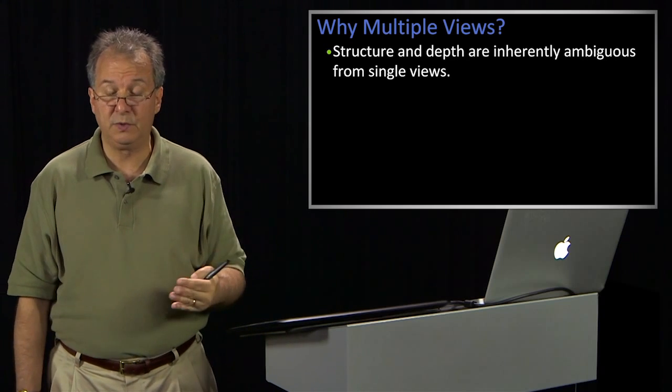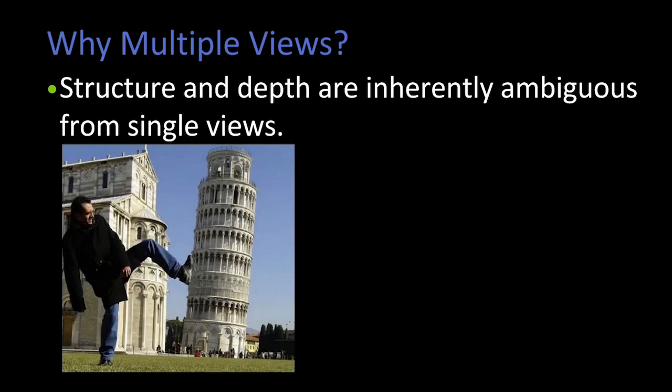Remember, we're projecting from 3D to 2D. When we do that, we lose information. So here's an example of a man pushing the leaning tower of Pisa over to make it lean even further, and either he's very large, the building's very small, or there's an ambiguity when you project from 3D to 2D.